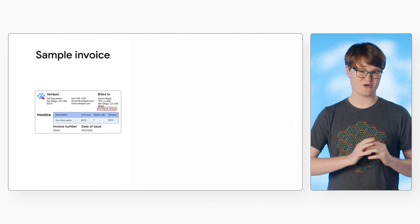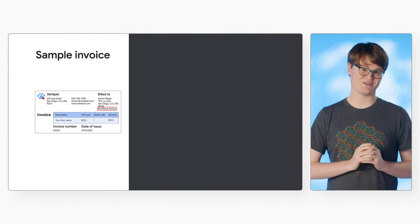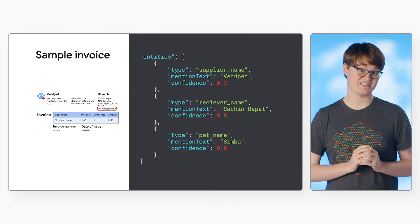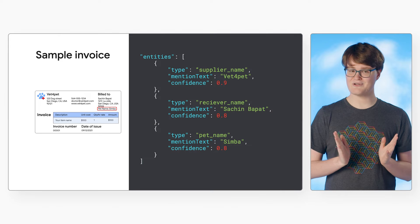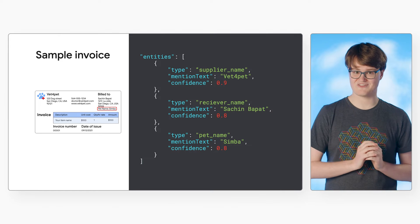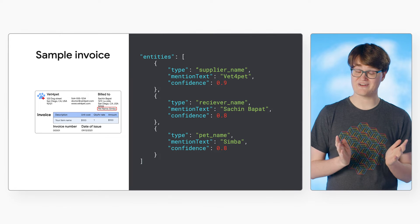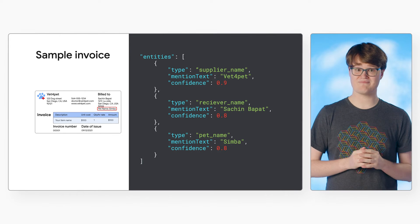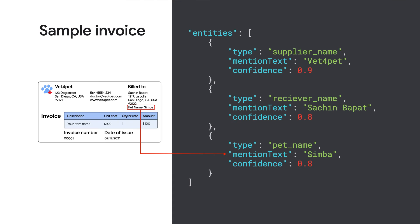So we can add pet name to the schema and train a new processor version that can be extra specialized for this document structure. Here's what a partial output could look like for our up-trained invoice processor. This output includes existing fields such as supplier name and receiver name, and also includes our custom pet name field.